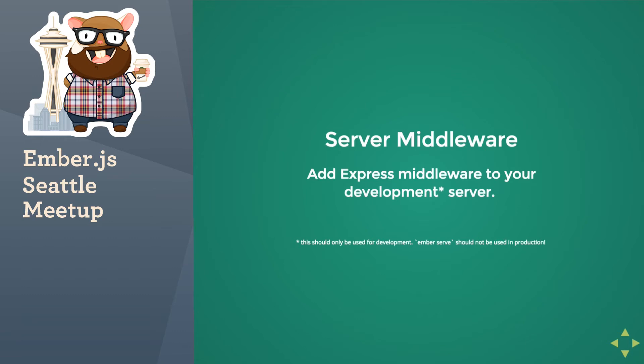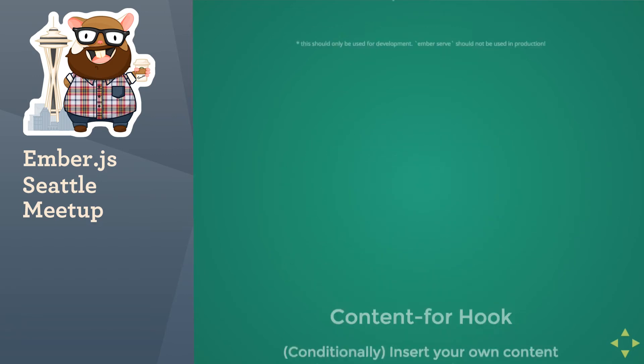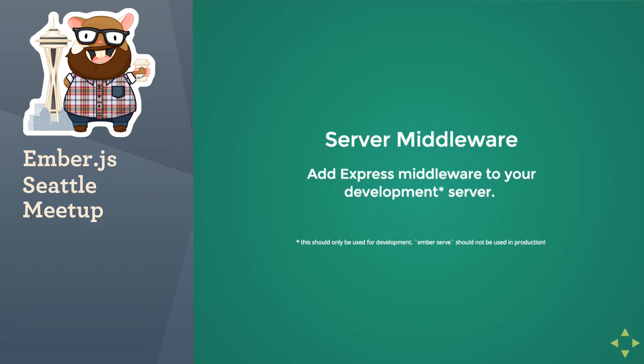Server middleware: in development, say that you need to add some specific headers or specific things your server needs to give your app so that when it hits your live API it has those things available. You can do quite a bit with the server middleware hook. It should only be used for development — you do not use Ember Serve for serving your production app.